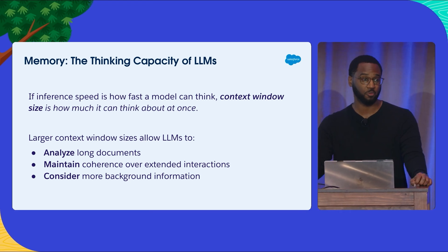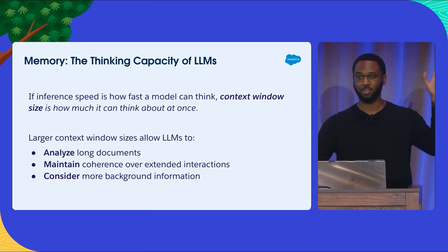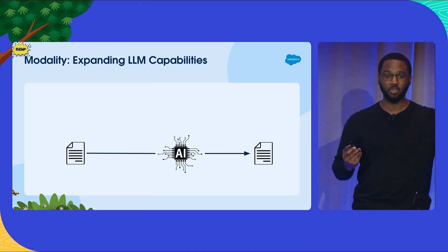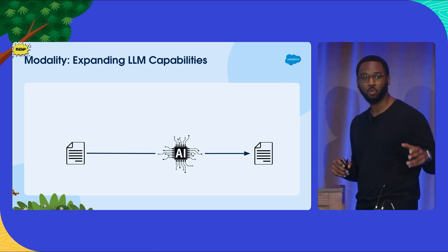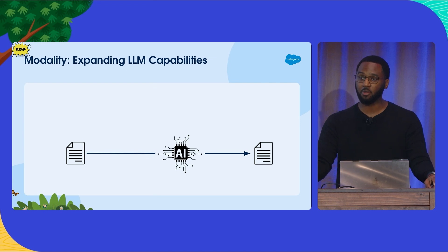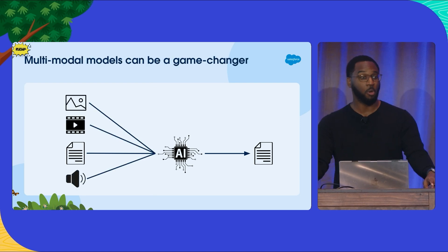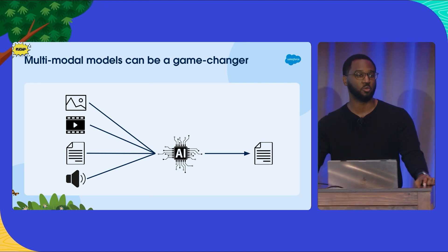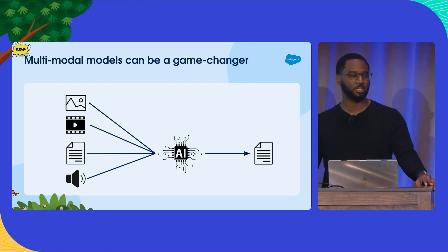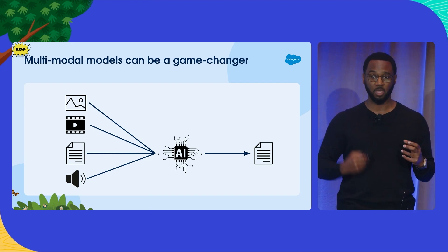The third factor is modality — and this one is new, from this year. Has anyone heard of a model called GPT-4 Omni? Traditionally, models take in text, process it, and generate text in response. But increasingly, models are able to handle different types of inputs with the same underlying large language model. Multimodal models are actually able to handle images, video, and audio, and then generate text. Some models can generate images as well, but generally those aren't large language models.